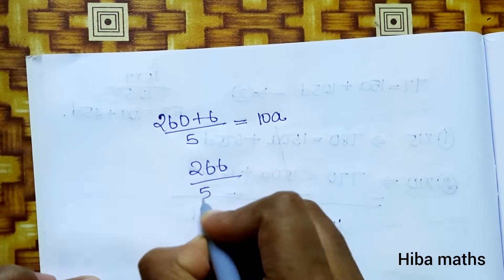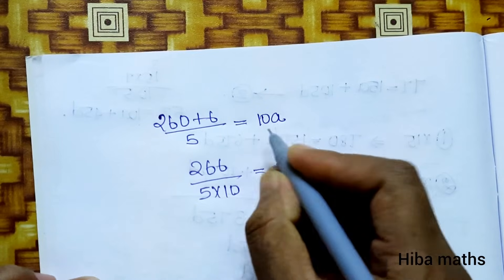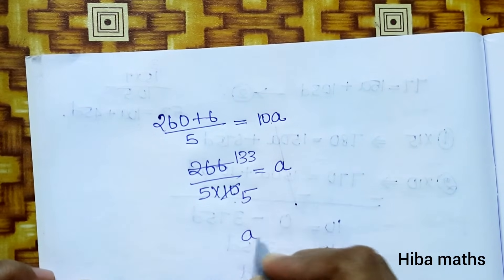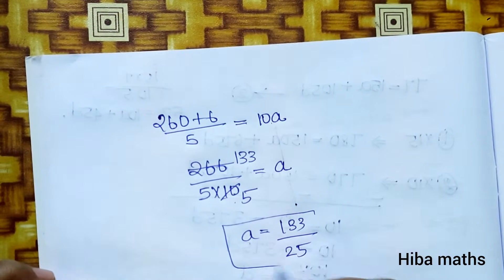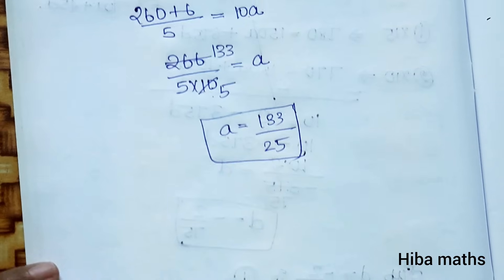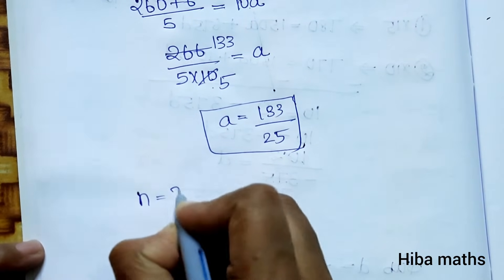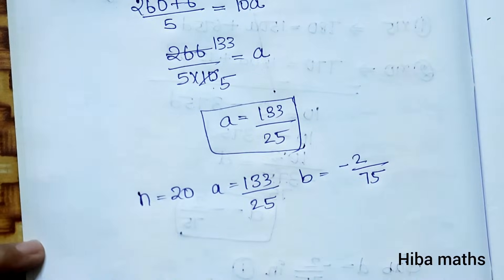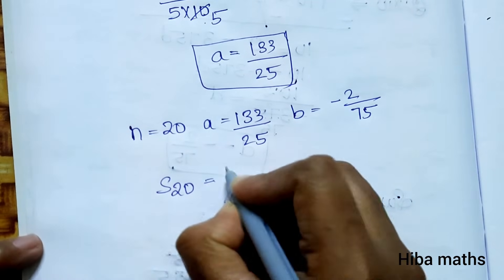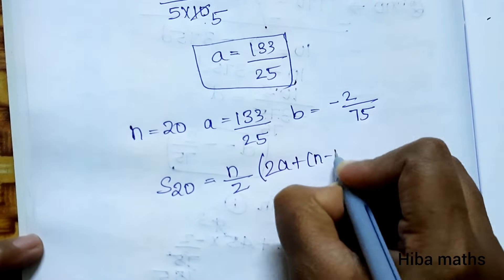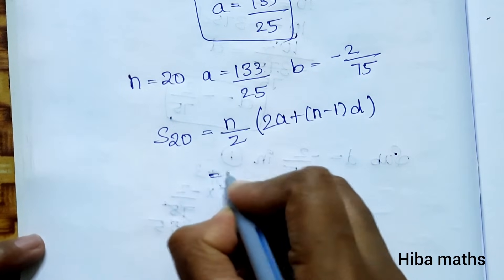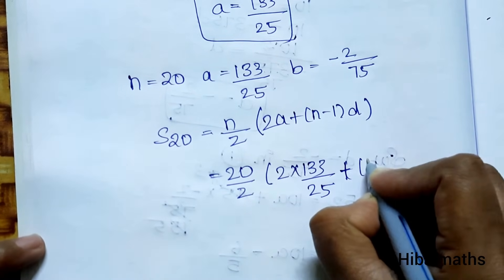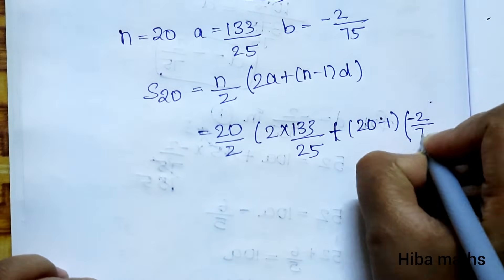Solving for a: 266 by 5 divided by 10 equals a, so a equals 133 by 25. Now using a and d to find S(20): n is 20, a is 133 by 25, d is minus 2 by 75. S(20) equals 20 by 2 into 2 into 133 by 25 plus 20 minus 1 into minus 2 by 75, which is 10 into 266 by 25 plus 19 into minus 2 by 75.